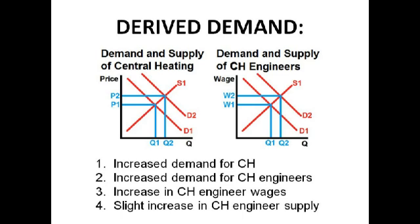So if there's an increased demand for central heating engineers, there will be an increase in central heating engineer wages, meaning there will be a slight increase in central heating engineer supply, because people will think they can make a lot of money becoming a central heating engineer. So the increase in demand for the original good leads to an increase in supply for the good which has the derived demand.